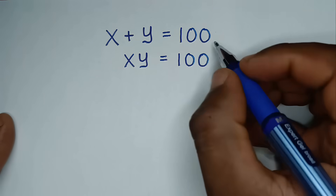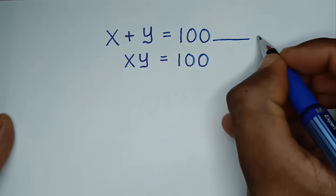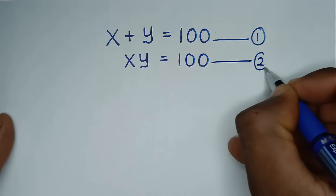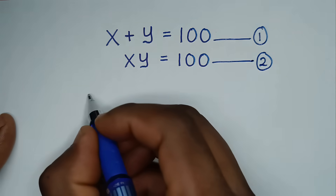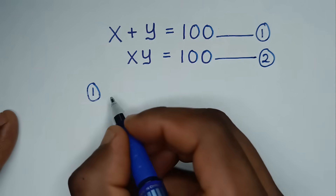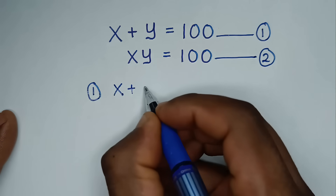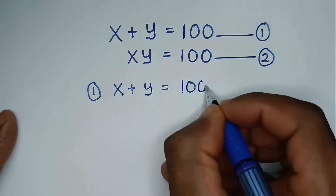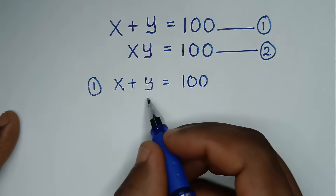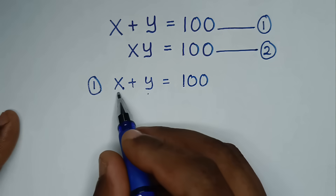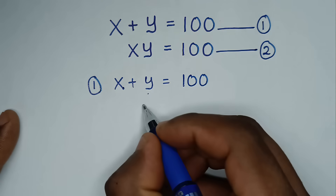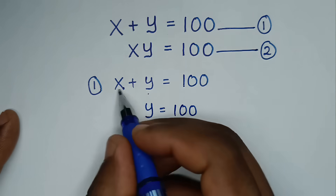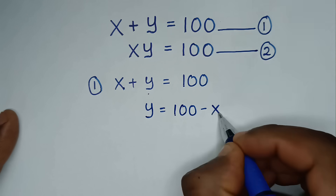In the first step, let's start by naming this as equation 1 and this as equation 2. From equation 1, which is x plus y is equal to 100, we'll make y the subject. So we'll take x to the right side, so it will be y is equal to 100 minus x.